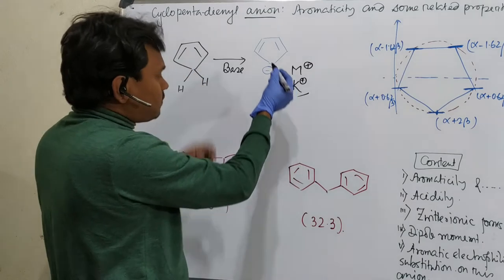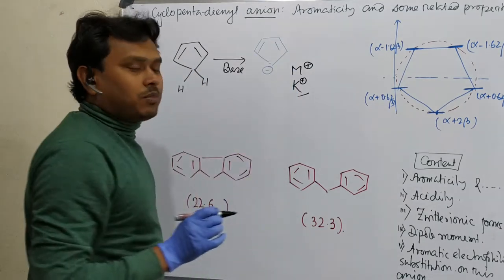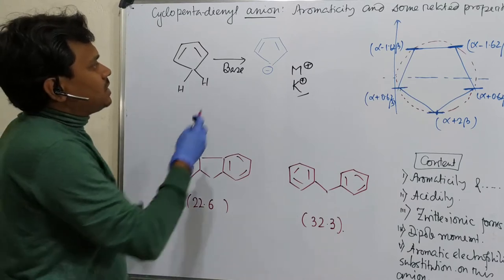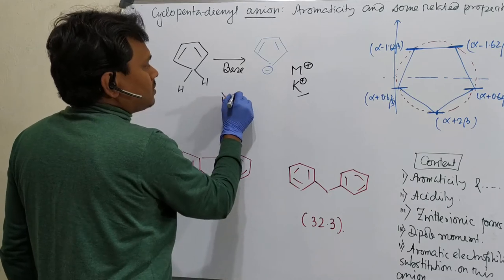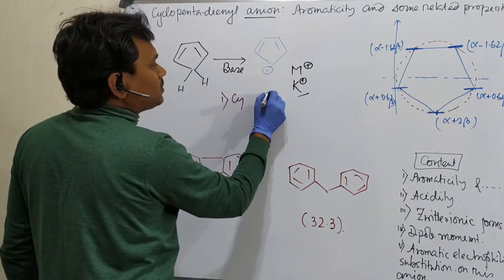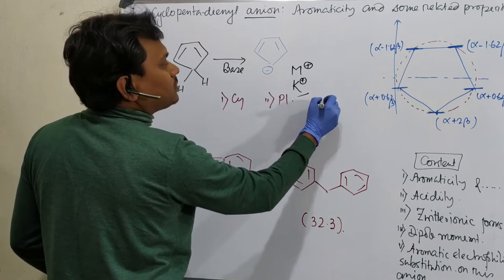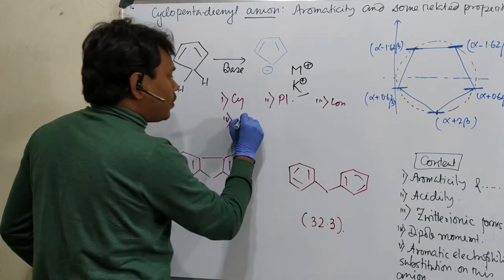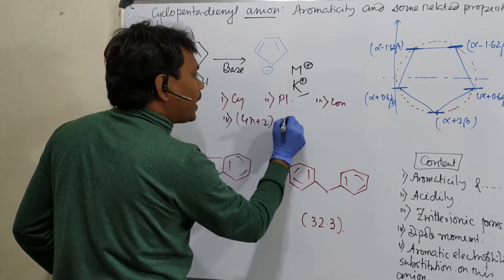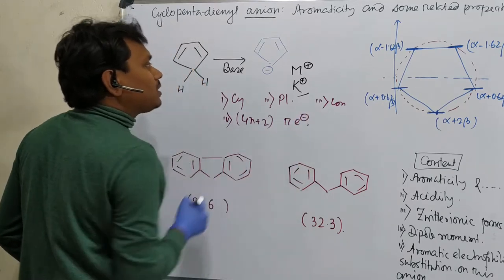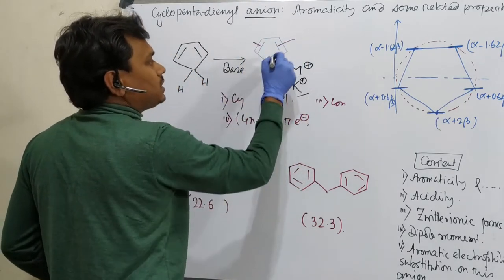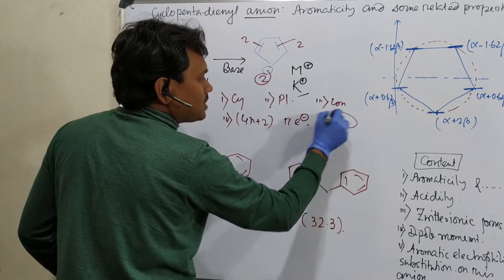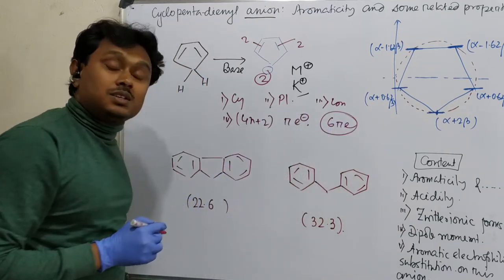This is a five-carbon unit, and I am claiming aromaticity for it. How can I say that? According to Hückel's rule: this ring is cyclic, planar, conjugated, and most importantly, it has 4n+2 pi electrons. It has six pi electrons — two from each double bond and two from the lone pair on the carbanion. That is the reason it is aromatic.